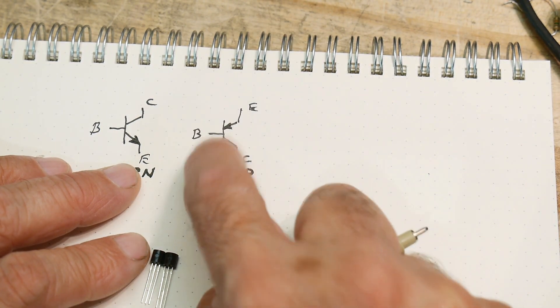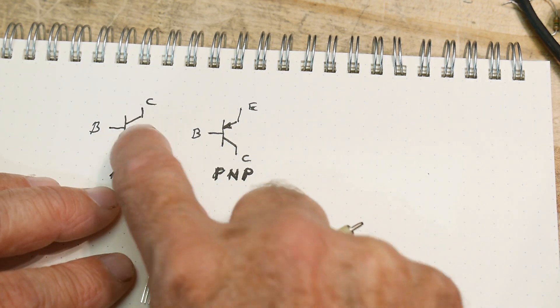We call this the base. The one with the arrow is the emitter, and the one without the arrow is the collector. So emitter, base, collector. Emitter is always the one with the arrow.